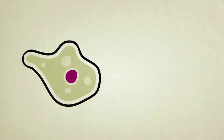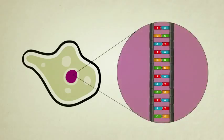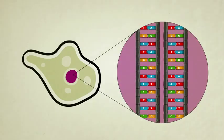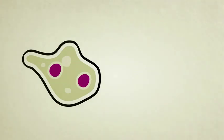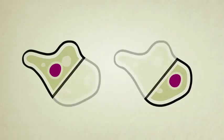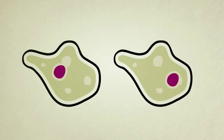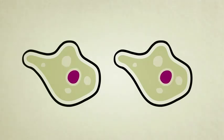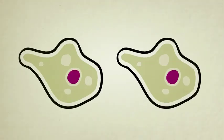Single-celled amoebas and other simple creatures reproduce by copying their DNA inside their guts, moving both copies to either side of their body, splitting in two right down the middle, and then growing back to full size. If all goes well, the two new amoebas will be exact copies of each other, but in nature, things aren't always perfect.